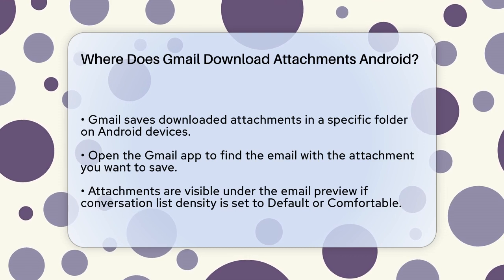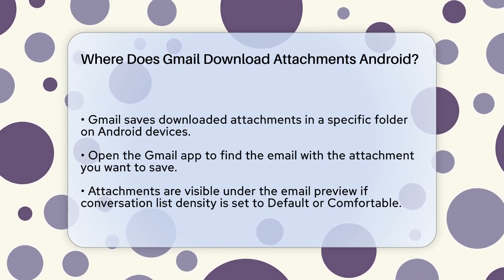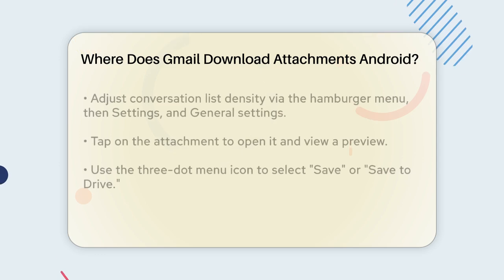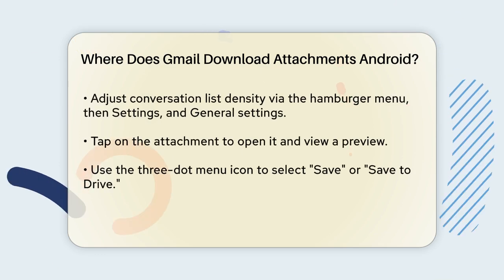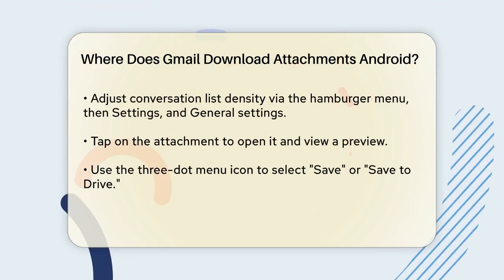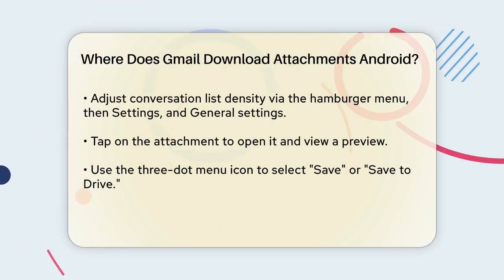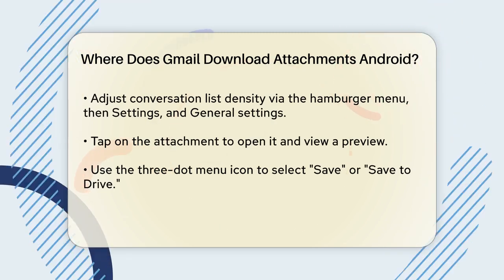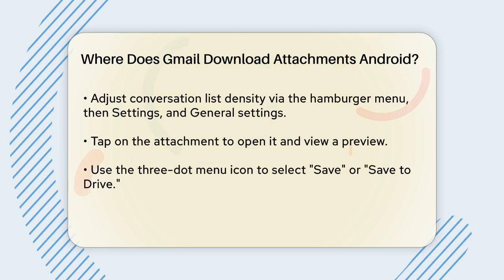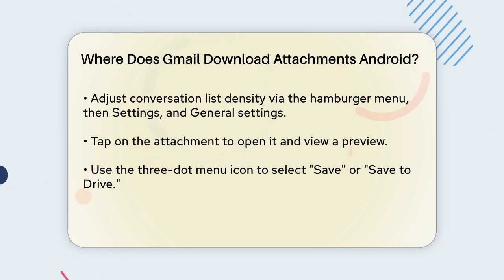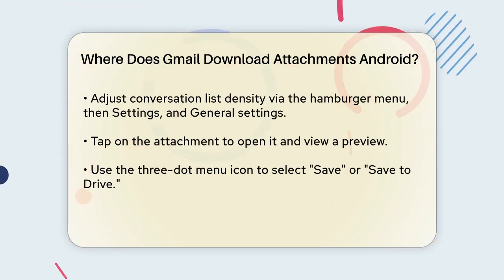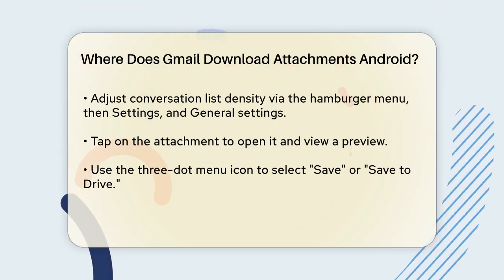First, open the Gmail app and navigate to the email that contains the attachment you want to save. You can see the attachments listed under the email preview if your conversation list density is set to default or comfortable. To change this setting, go to the hamburger menu icon at the top left corner, then to Settings, General Settings, and adjust the conversation list density.